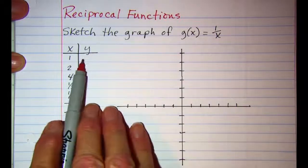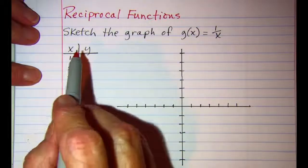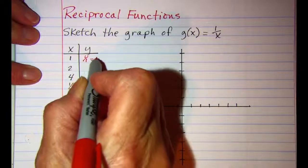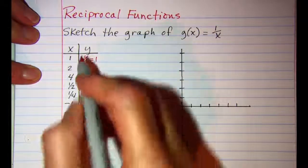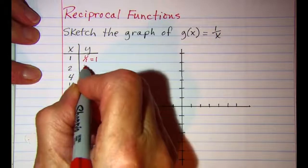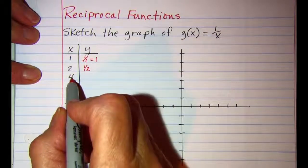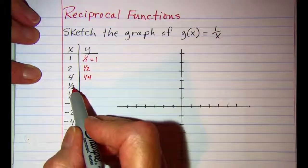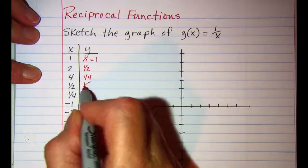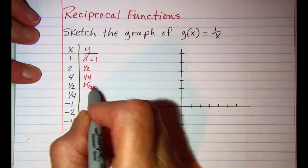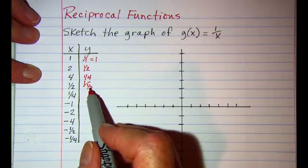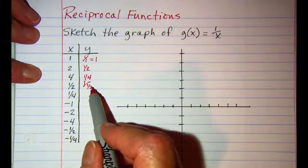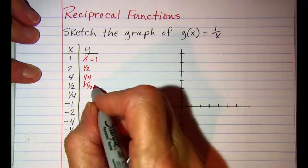For this first one we're going to look at plotting points. When x is one, y is one over one, which is one. When x is two, y is one over two. When x is four, y is one over four. When x is one half, y is one over one half. Remember, division by a fraction means you multiply by the reciprocal, so one multiplied by two over one is going to be two.